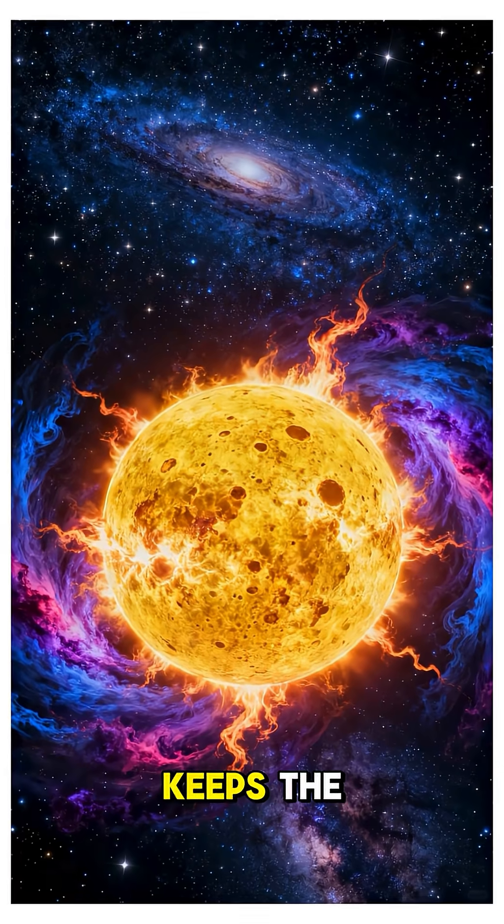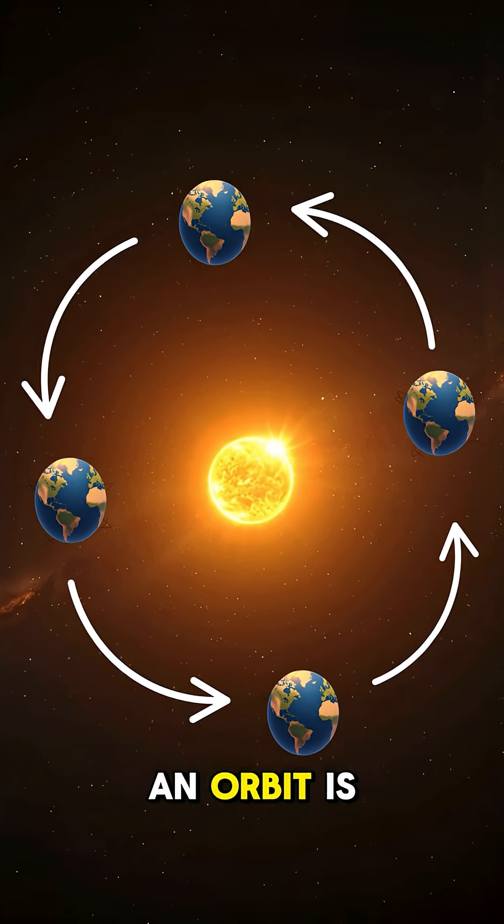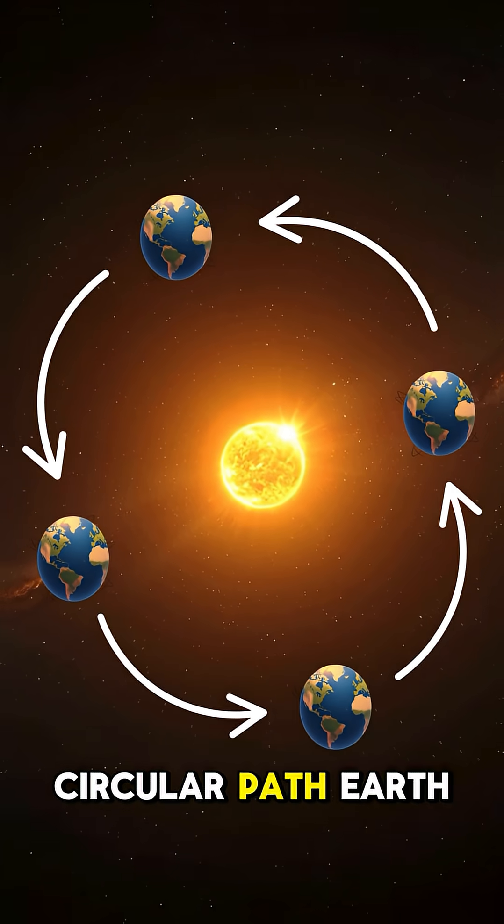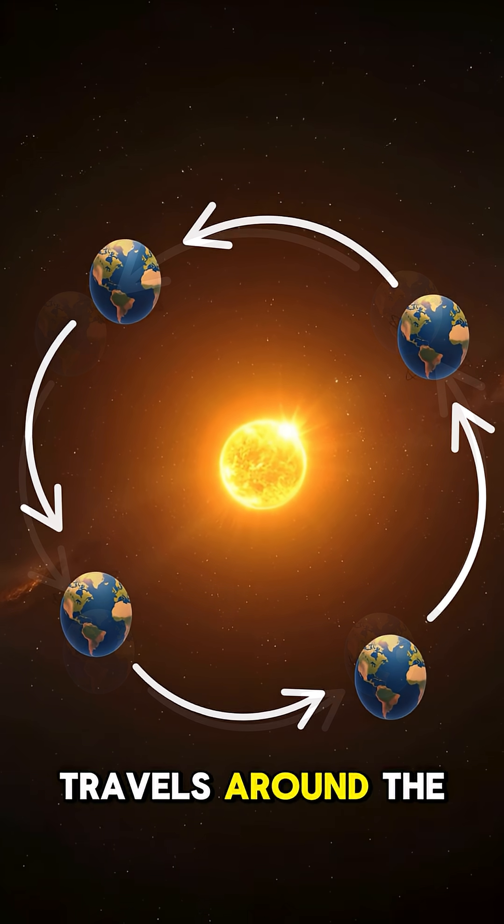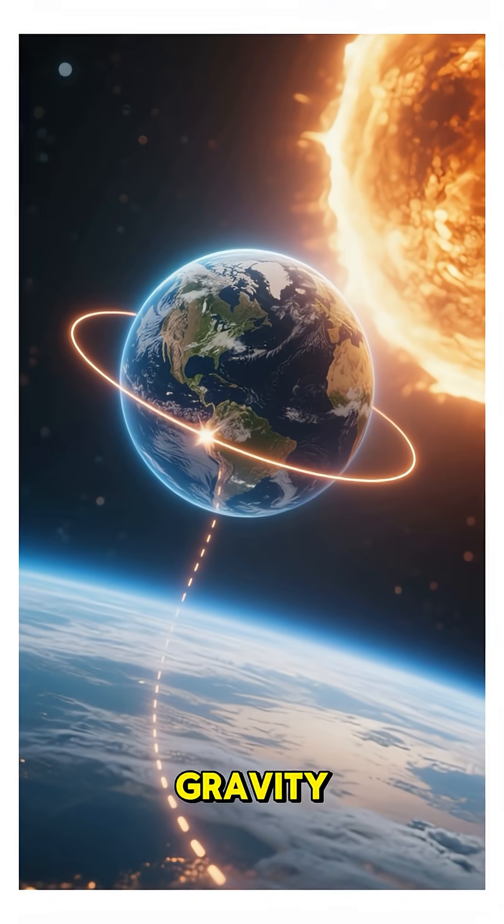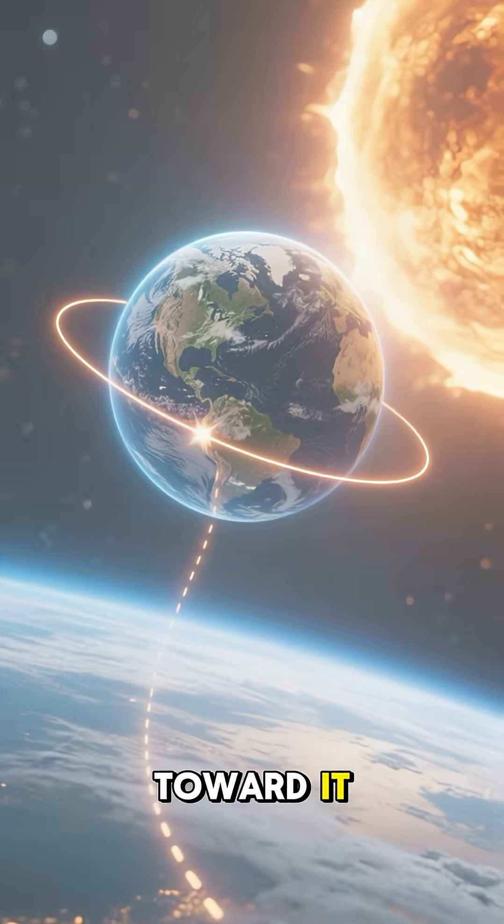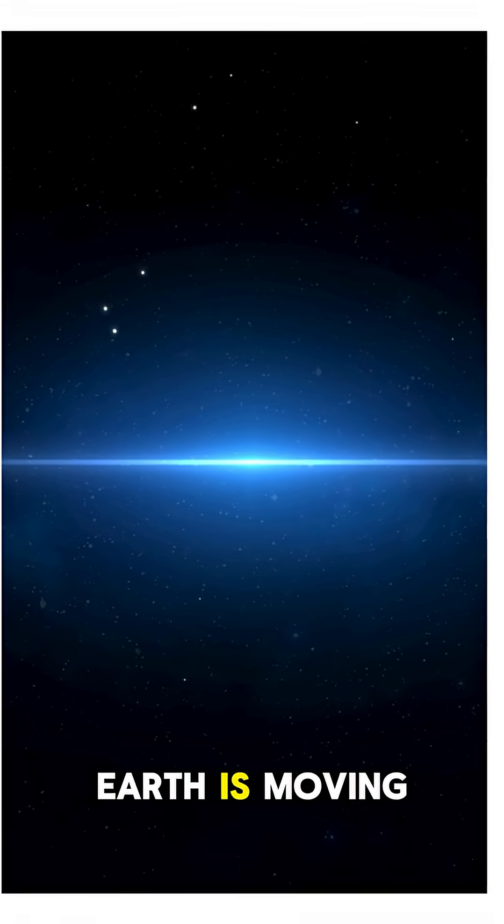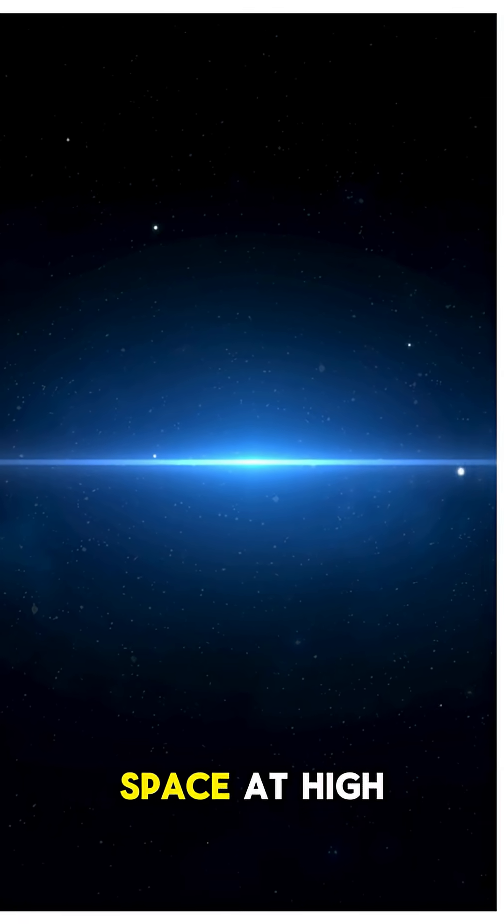The Sun's gravity keeps the Earth in orbit. An orbit is the nearly circular path Earth follows as it travels around the Sun. The Sun's gravity pulls the Earth toward it, but at the same time, Earth is moving sideways through space at high speed.